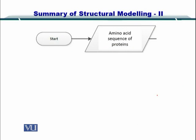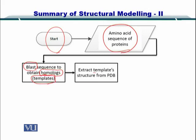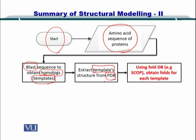Now let's take a look at a step-by-step flowchart. You start by looking at the sequence of the protein. You find homologues from the sequence databases by BLASTing them — these are called the templates. Then you find the structures of each one of these templates from the PDB, and these PDB structures are searched in the fold database such as SCOP.